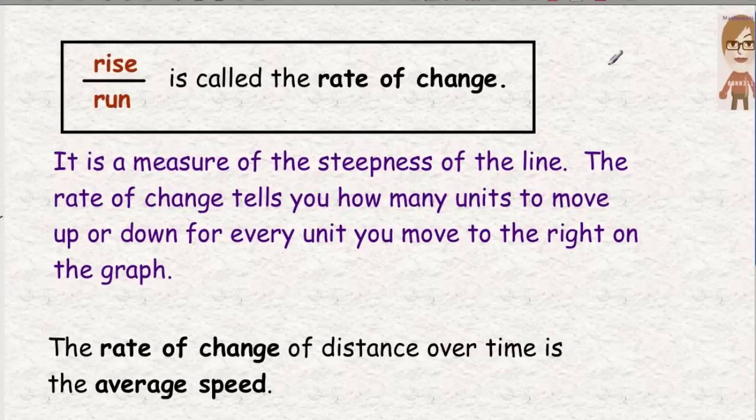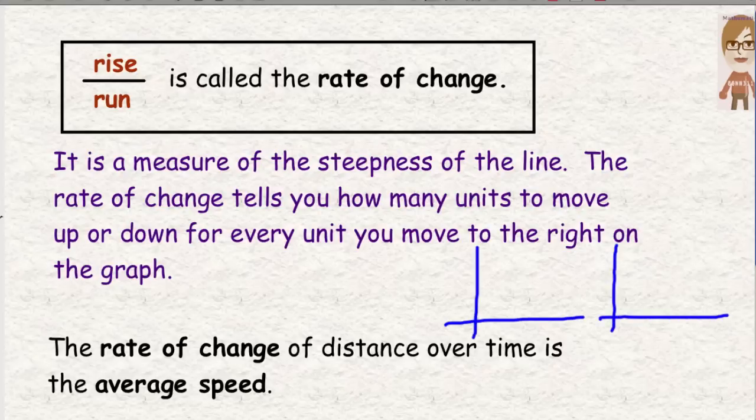It's a measure of the steepness of the line. The rate of change tells you how many units to move up or down for every unit you move to the right on the graph. So the rate of change of distance over time is the average speed. Rates are not always about speed. If you think of your heart rate, that's not a speed. That's beats per minute. But this lesson is just going to mostly be about speed. Please notice, if you have two graphs, and one graph looks like this, and the next graph looks like that, I'm hoping you'll remember maybe from what we've looked at before, that this line would, that means it's a faster rate. It would be a faster speed. The more steep it is, the faster they're going.